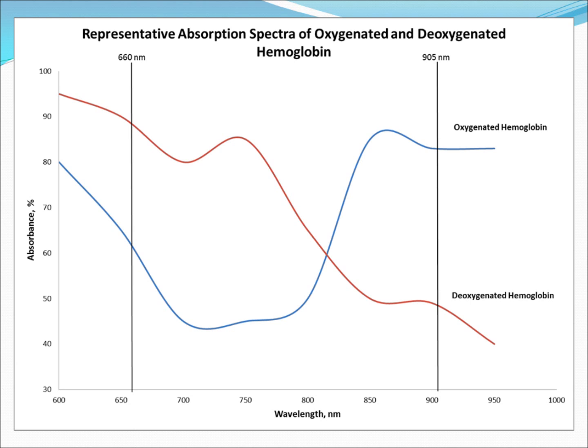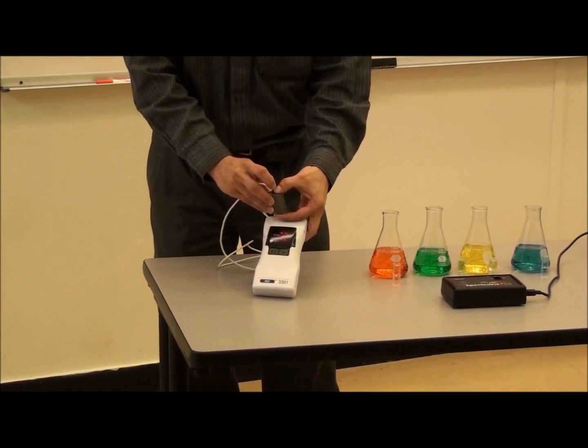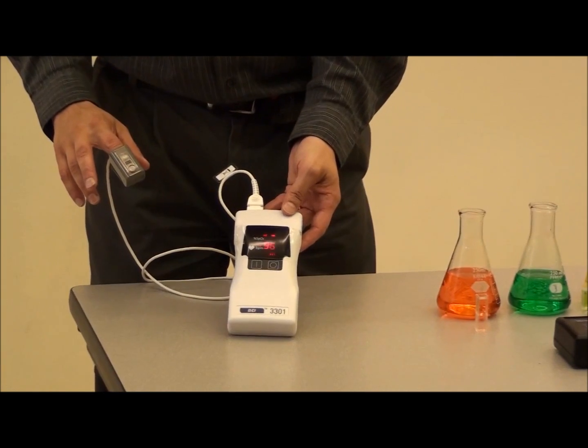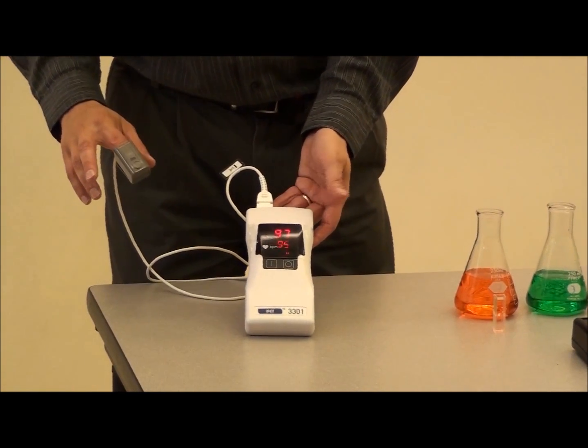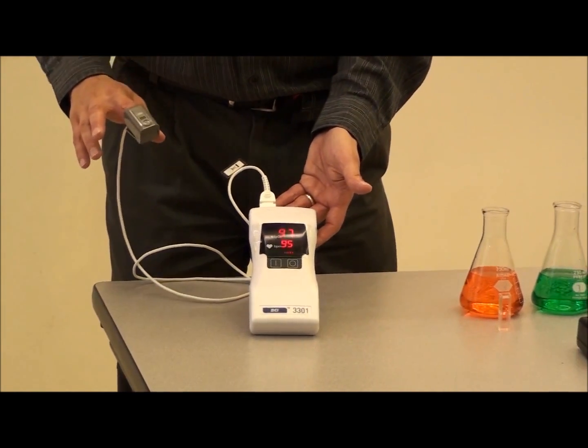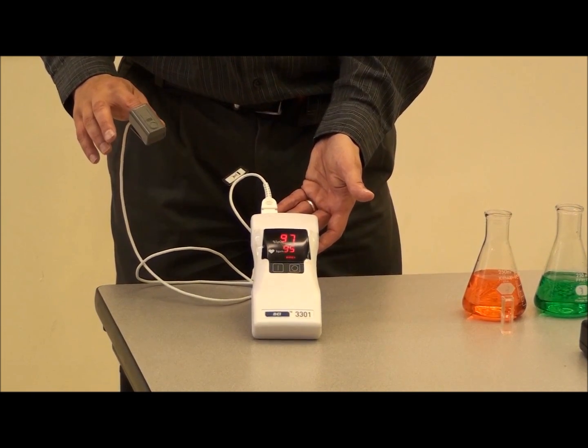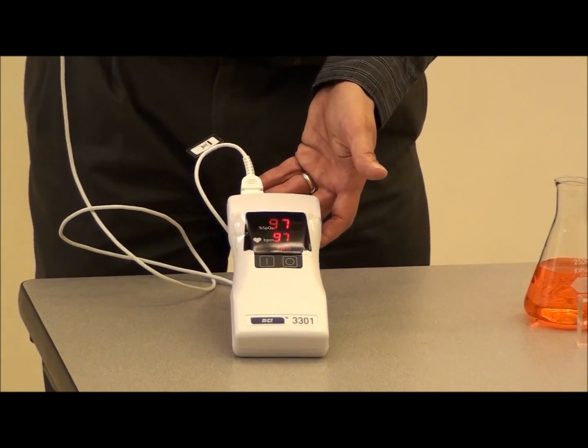The LEDs in the sensor emit photons of radiation, either red light or infrared radiation, that pass through a relatively translucent part of the body. For the case where the instrument has a finger probe, this would be my finger that the radiation passes through. The photons that successfully pass through my finger are subsequently detected by the photon detector. The photodetector thus measures the intensity of the transmitted signals at 660 and 905 nm.